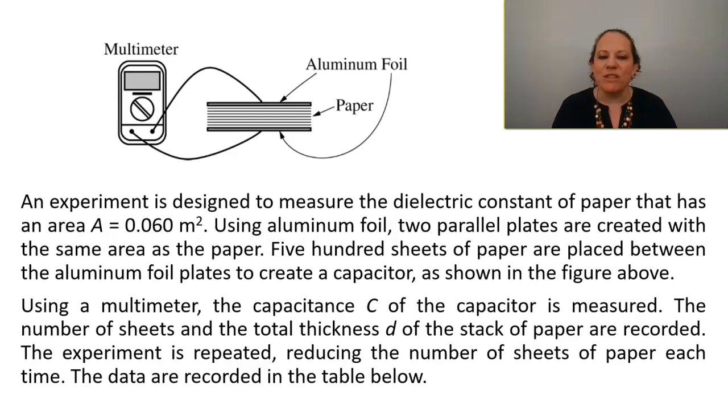An experiment is designed to measure the dielectric constant of paper that has an area of 0.06 square meters. Using aluminum foil, two parallel plates are created with the same area as the paper. 500 sheets of paper are placed between the aluminum foil plates to create a capacitor as shown in the figure above. Using a multimeter, the capacitance C of the capacitor is measured.